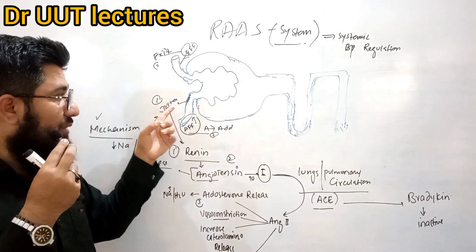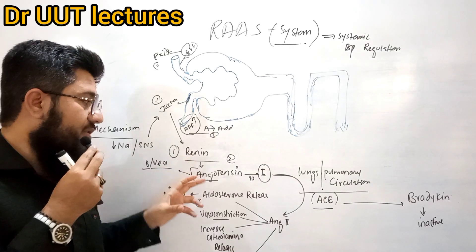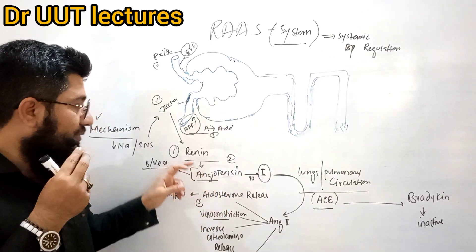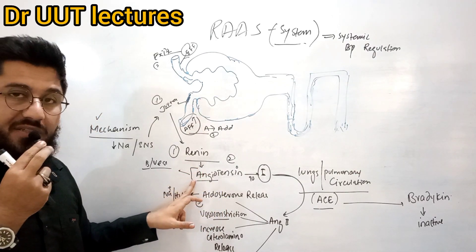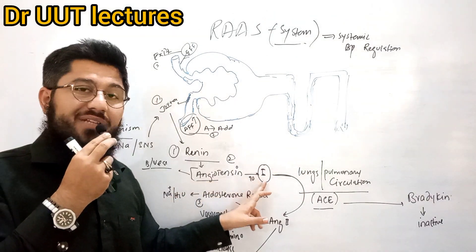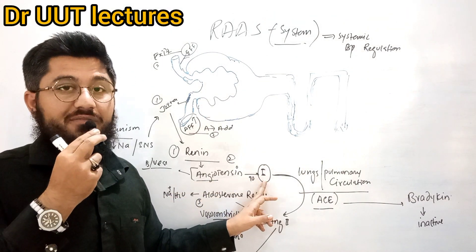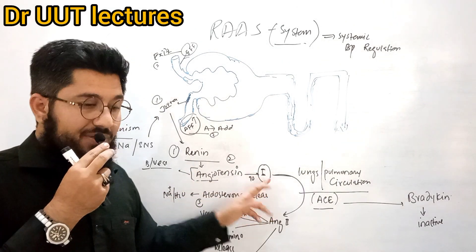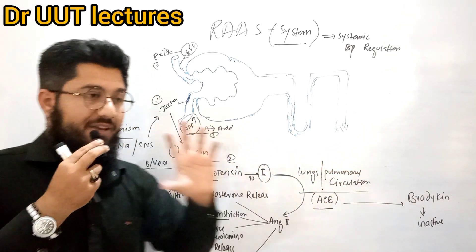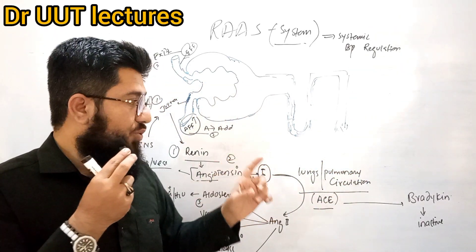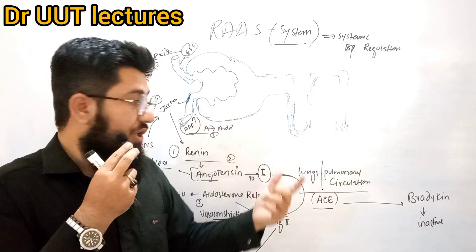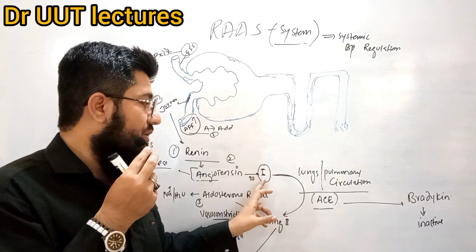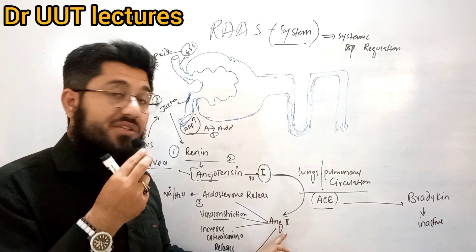Once renin is released, it interacts with angiotensinogen floating in the blood. Renin converts angiotensinogen into angiotensin 1. Then angiotensin 1 moves through the circulation and reaches the lungs.